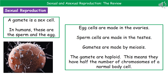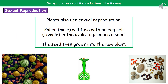It's not just animals that reproduce sexually — plants do too. Plants still have male and female gametes that fuse together. In plants, pollen is the male gamete, and it fuses with the egg cell, which is the female gamete. This produces the seed, and it's that seed which then grows into a new plant.